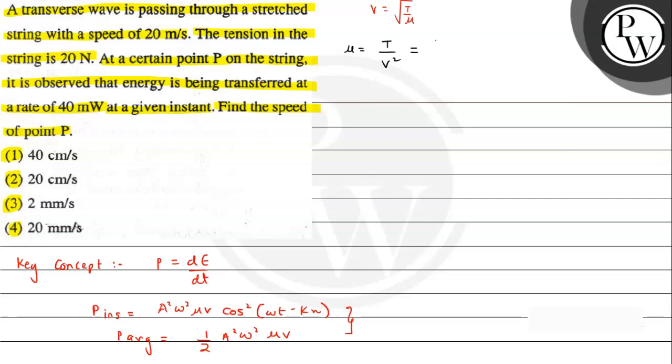We have tension given as 20 Newtons and speed as 20 meters per second squared. So we can say this will be 1 by 20, and this is mu, in kilograms per meter. That is mass per unit length.